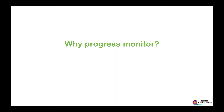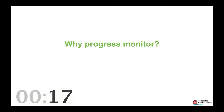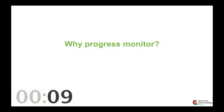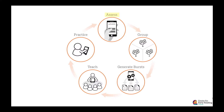Before we go into the details of scoring accuracy, let's take a few moments to reflect on why you think we should progress monitor students. Remember how BIRST works? Each cycle requires that students get progress monitored. The progress monitoring results guide the algorithm to keep generating catered lessons that are very specific to students' needs. The cycle repeats every 10 days.